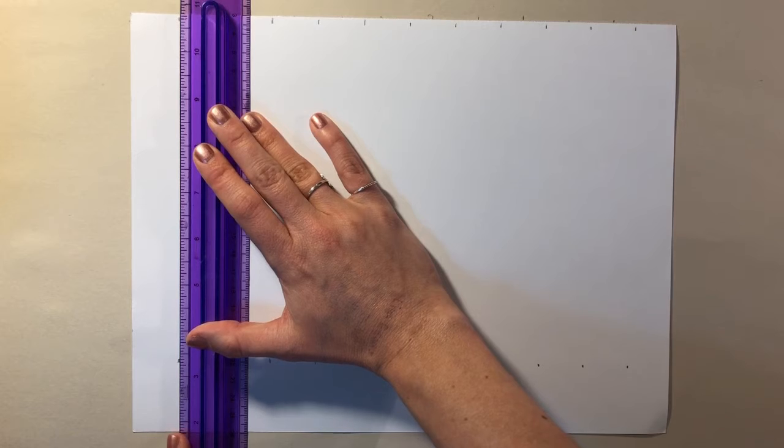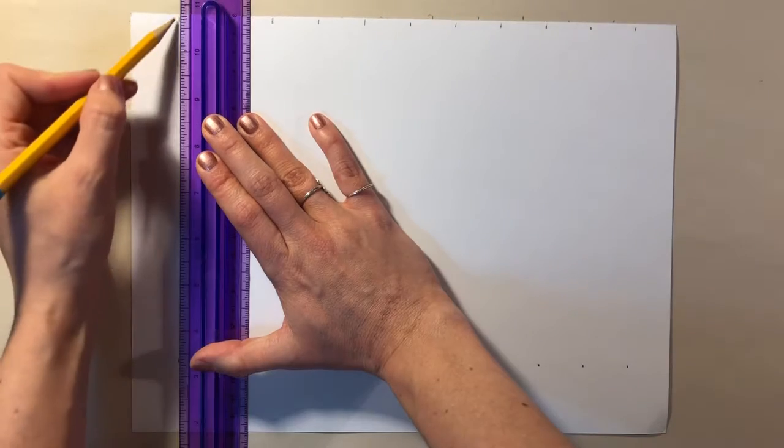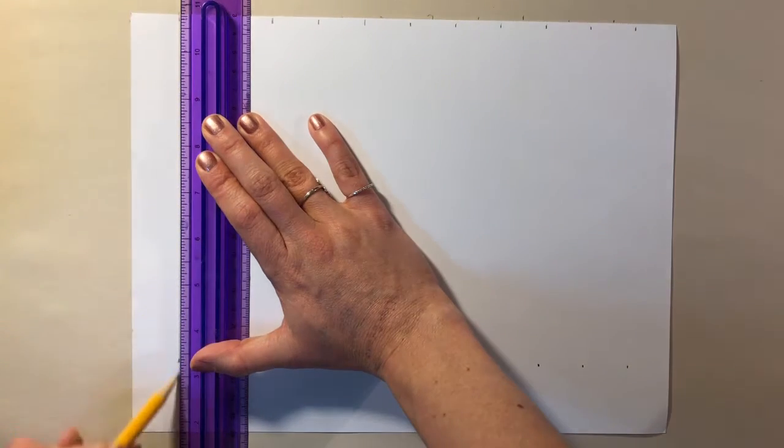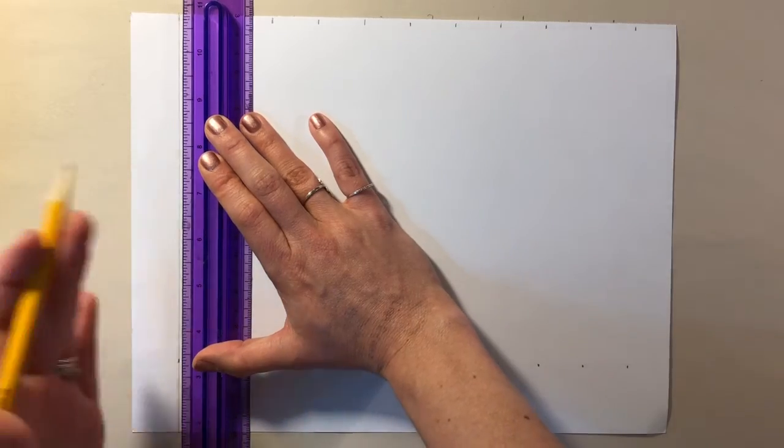Make sure that it's lined up very carefully, very carefully, and hold the ruler nice and steady. You're going to draw a line all the way across. Now, this line doesn't need to be particularly dark.